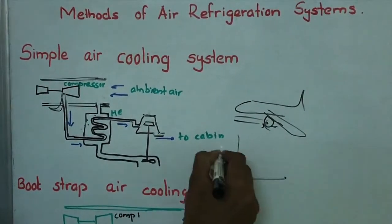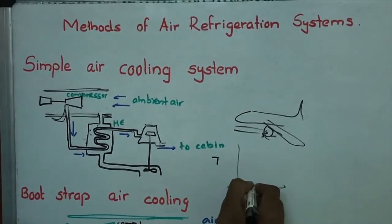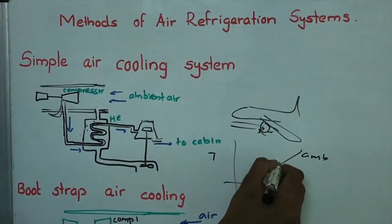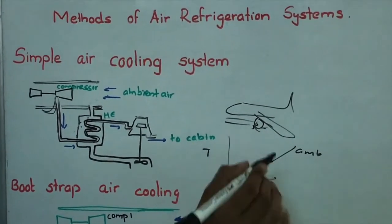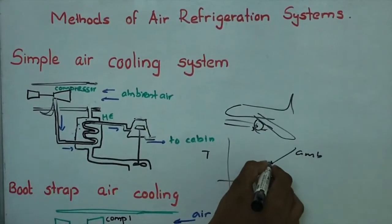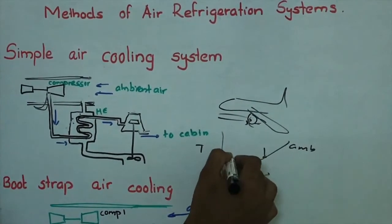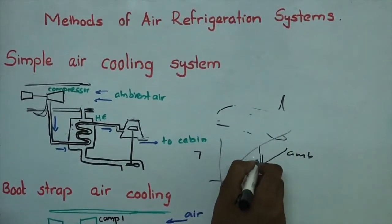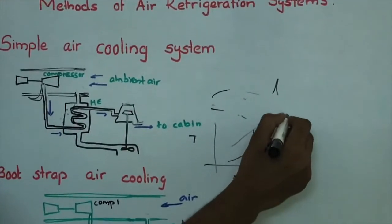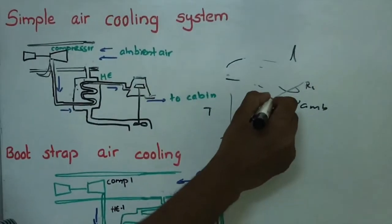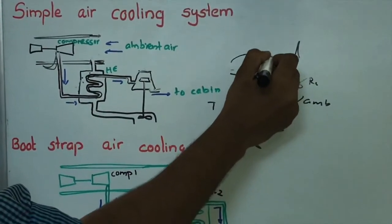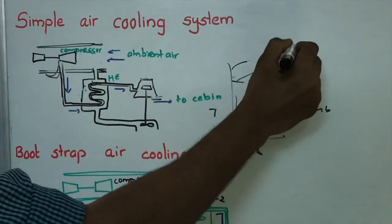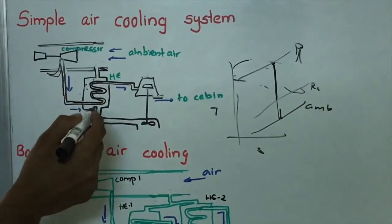If we draw the TS diagram, the ambient condition is the starting point with its initial pressure and temperature. First, ramming occurs — considering only ideal processes, ramming causes an increase in pressure, reaching the ram pressure. After that, main compression occurs in the compressor, reaching the compressor pressure.